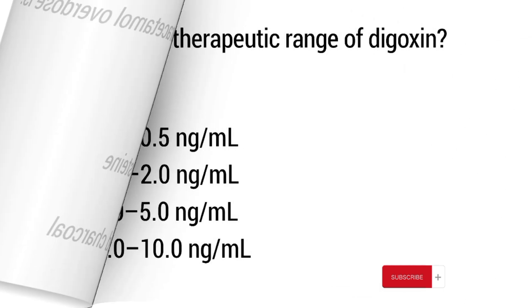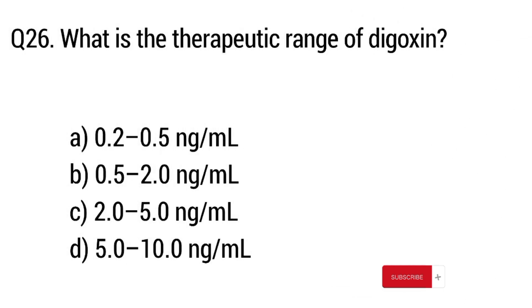Question number 26. What is the therapeutic range of digoxin? The right answer is option B: 0.5 to 2.0 ng/mL.